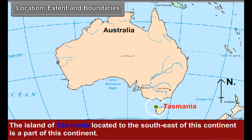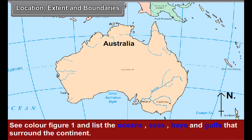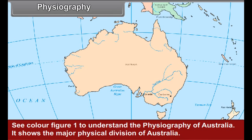The island of Tasmania, located to the southeast of this continent, is a part of this continent. List the oceans, seas, bays, and gulfs that surround the continent.